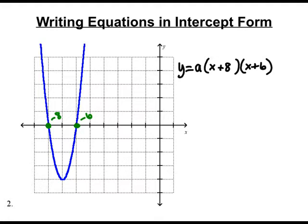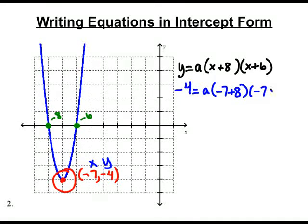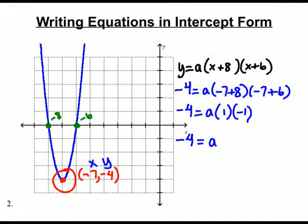And now all I need to do is find one other point. It could be my vertex. It could be any point you wanted it to be. I'm looking at this point right down here, which looks pretty nice and easy to tell. So that looks like that's at negative 7, negative 4. So now all I do is I take my equation. Everywhere I see an x, I'm going to put in negative 7. Everywhere I see y, I'm going to put in a negative 4. So negative 4 equals a, x which is negative 7, plus 8. And x again, negative 7, plus 6. So we get negative 4 equals a, negative 7 plus 8 is 1. Negative 7 plus 6 is negative 1. We get negative 4 equals a times negative 1, divide both sides by negative 1. We get a equals positive 1 fourth.